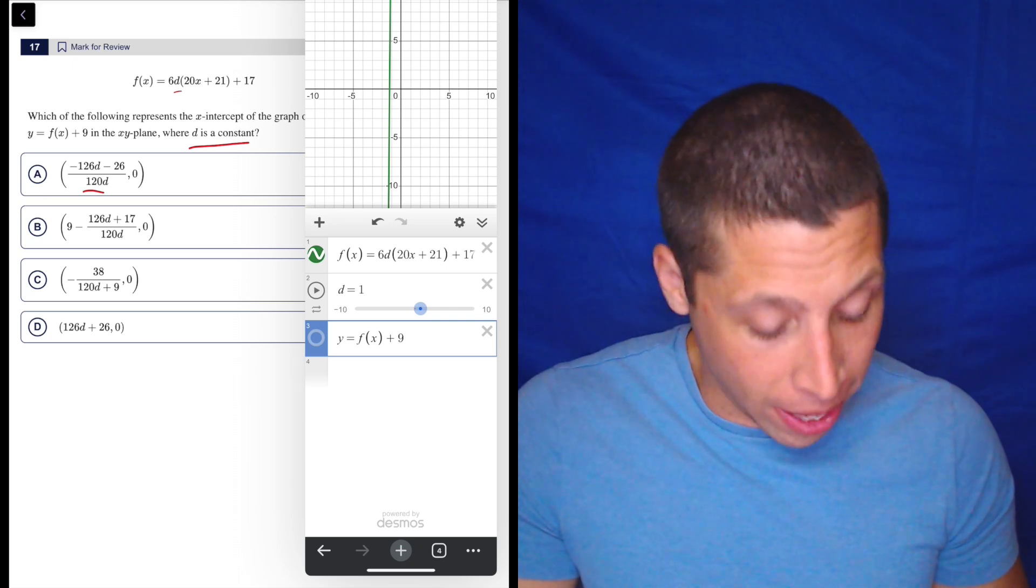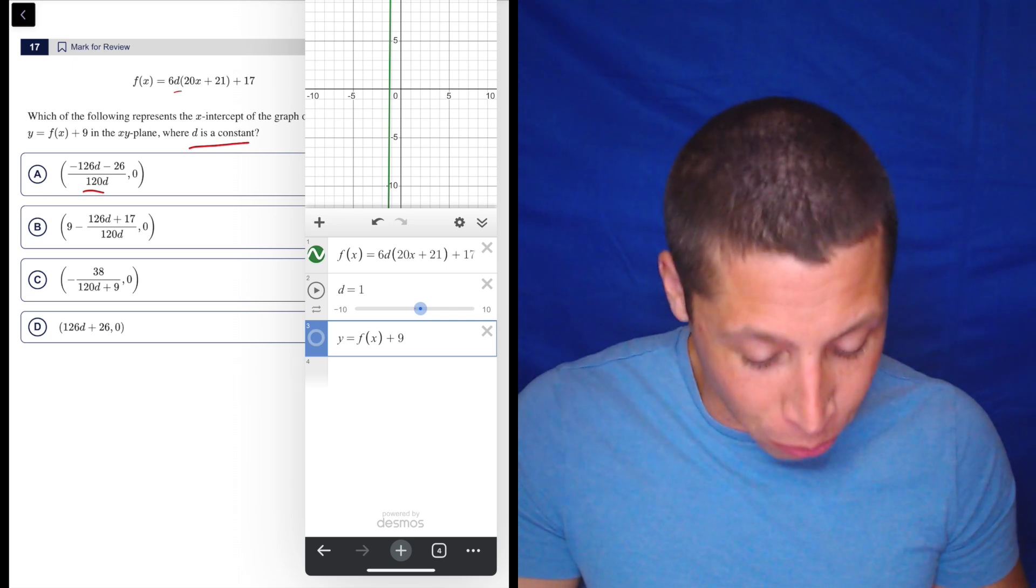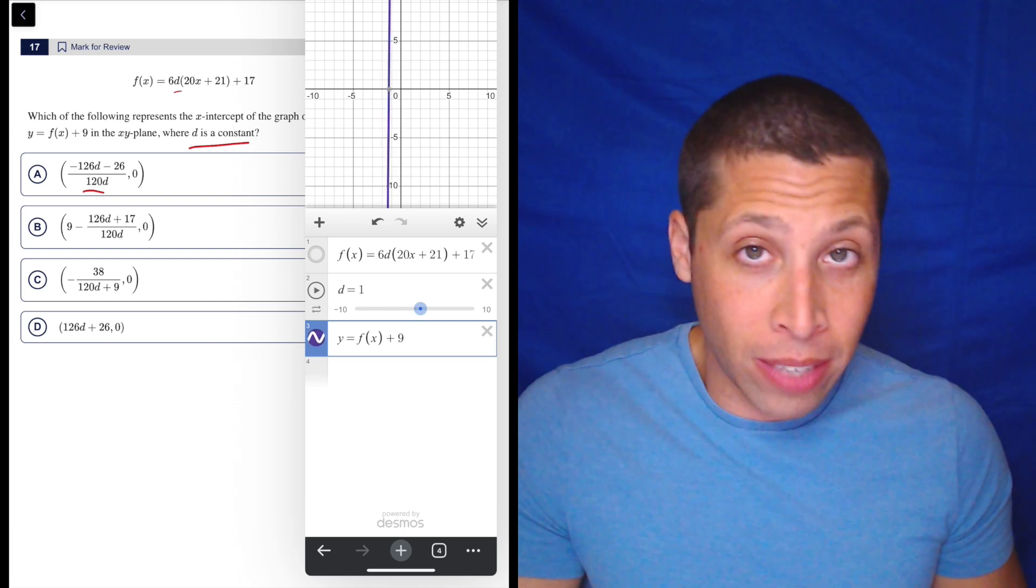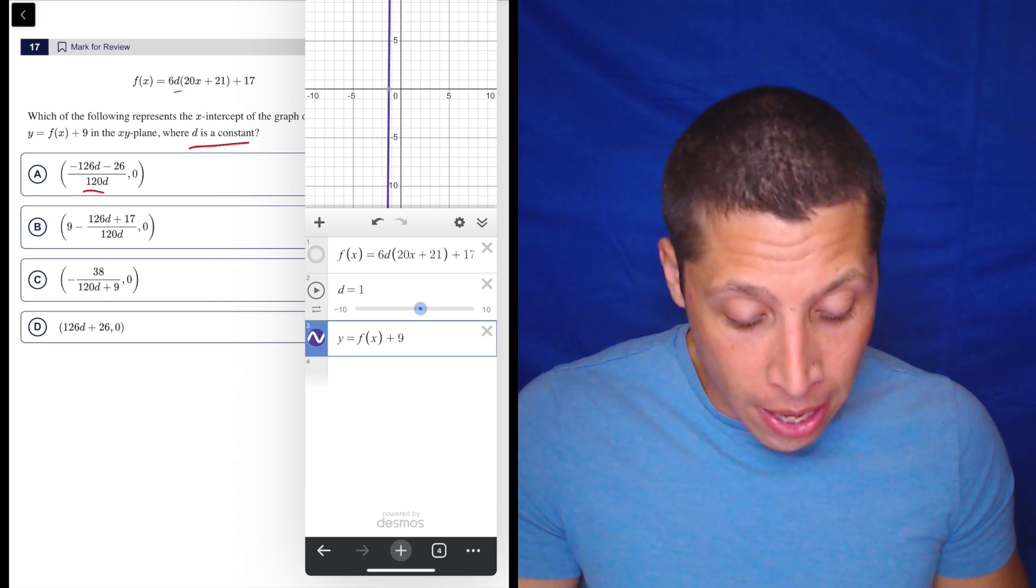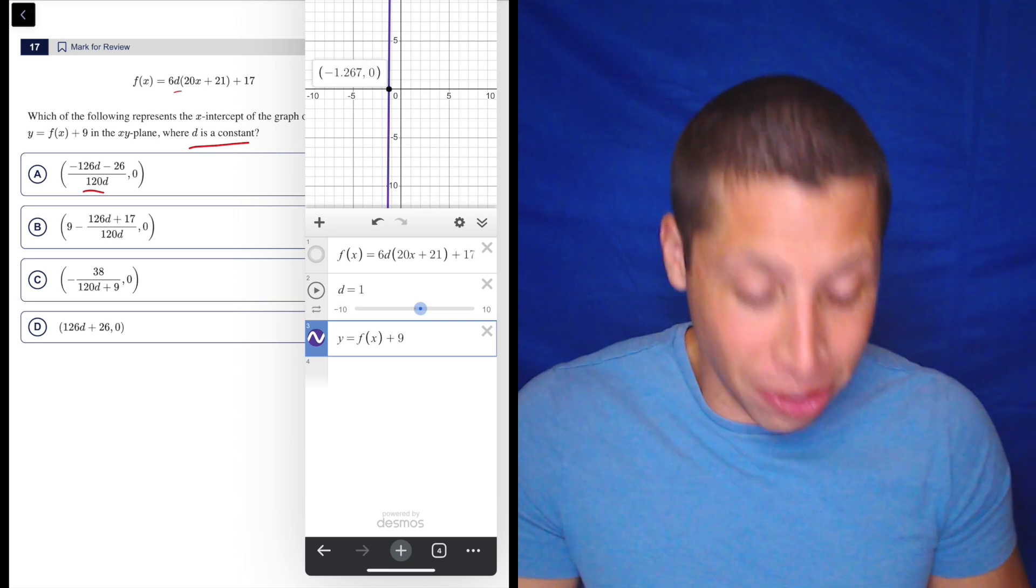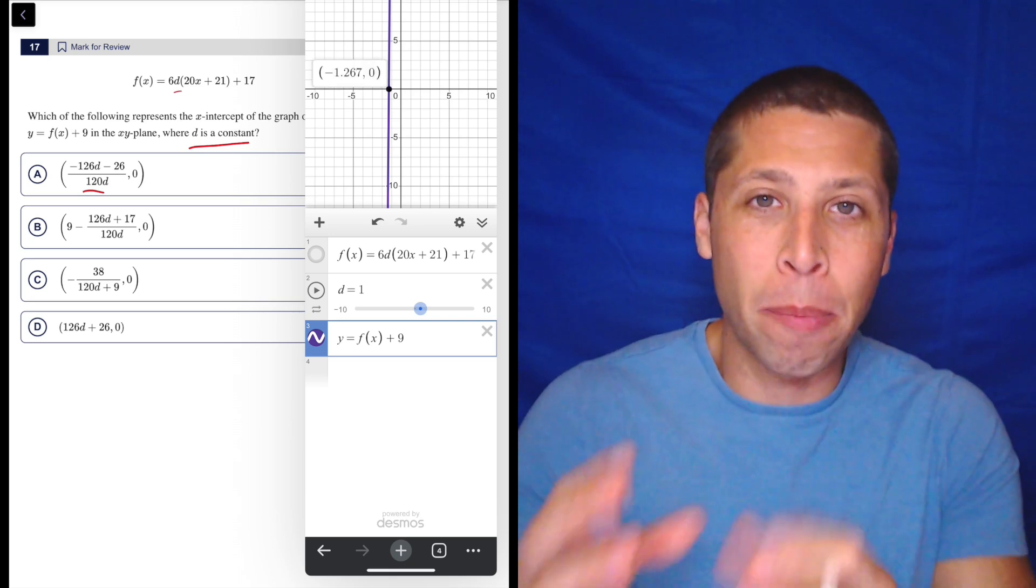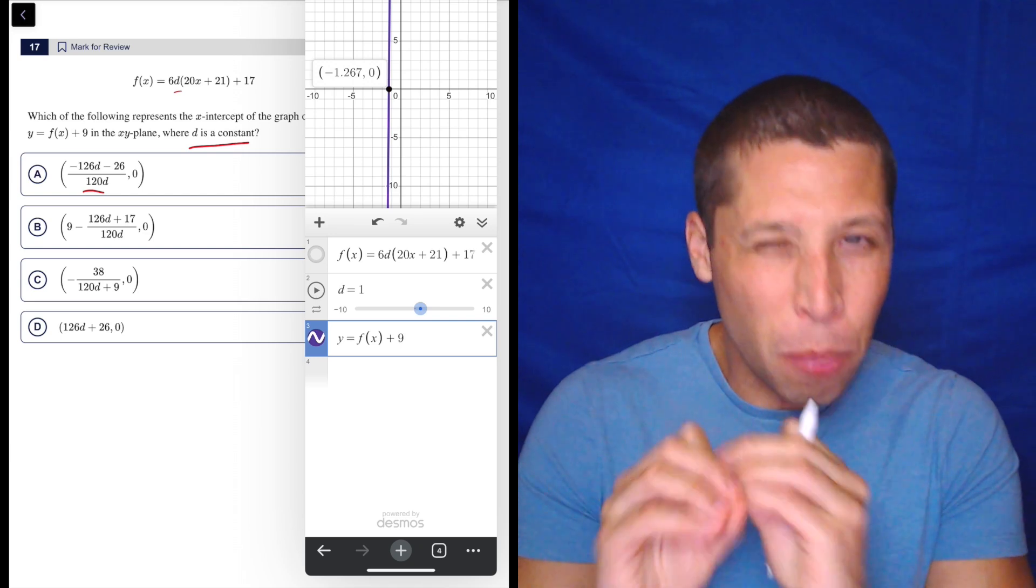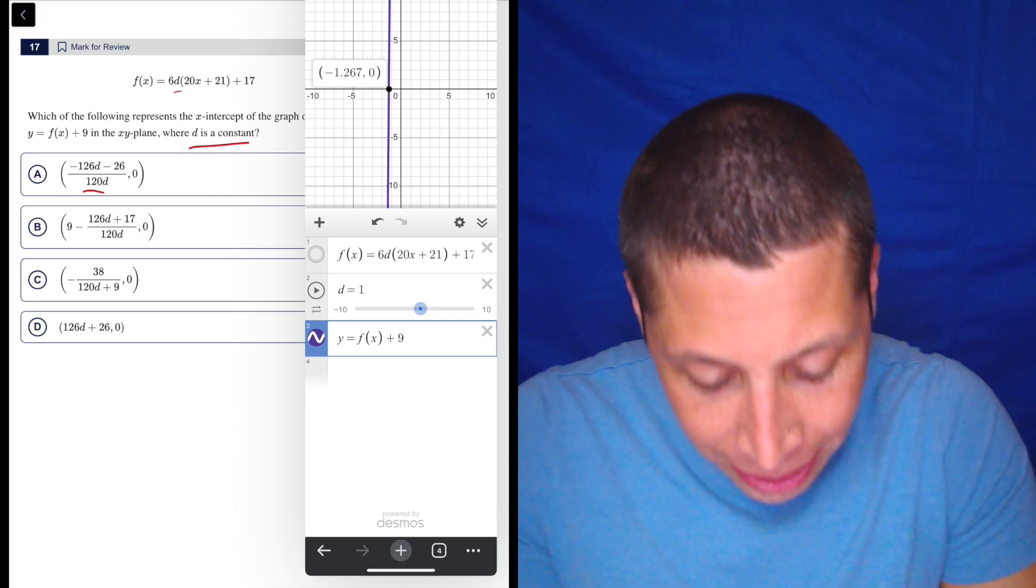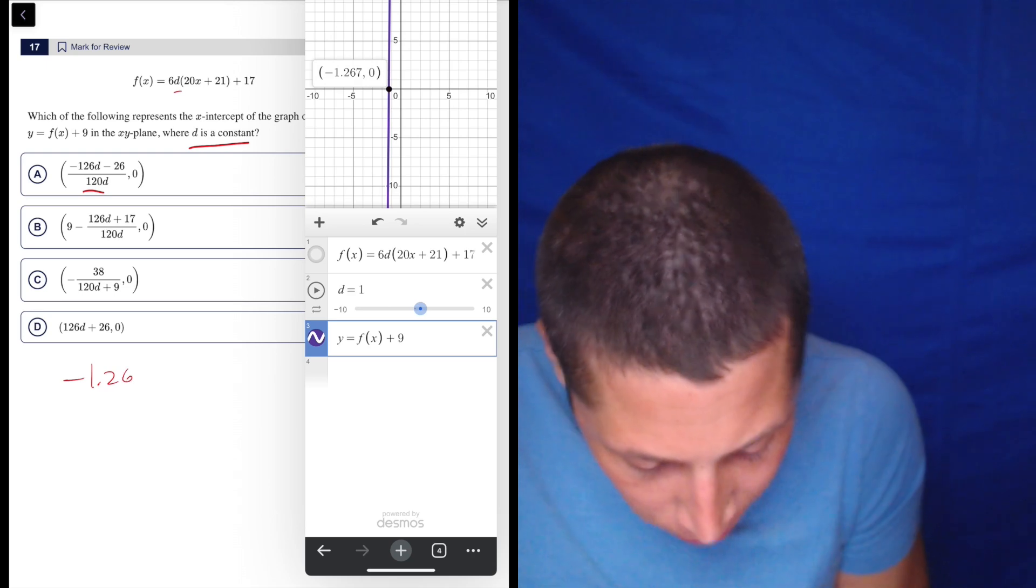So we've got our original F of X. We've got D as a constant now equal to one. We're going to turn off the original because I don't care about it. I want to get this new one, this shifted graph. And Desmos is amazing. What it allows me to do is just tap and get an X intercept. Any intercept is going to be a tappable point for pretty much every equation. So negative 1.267. I'm going to write that down.